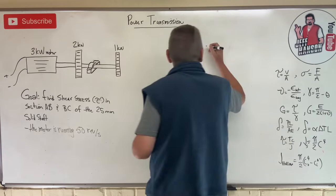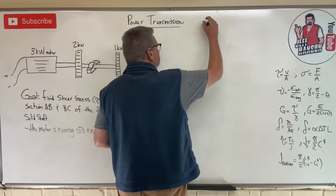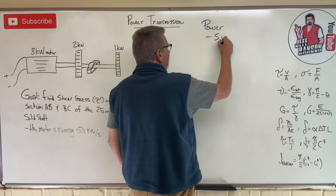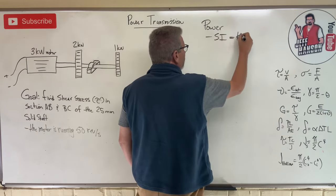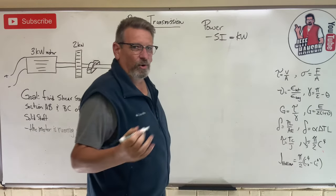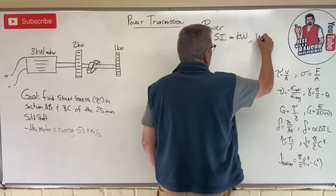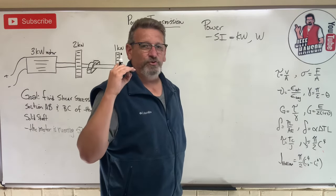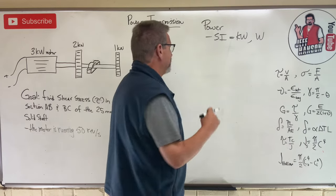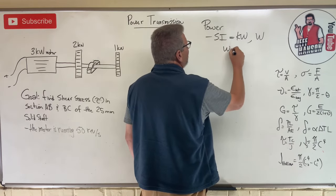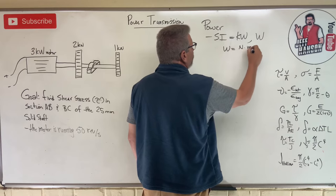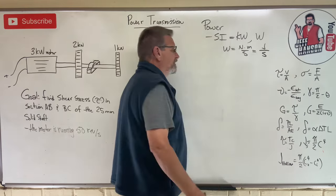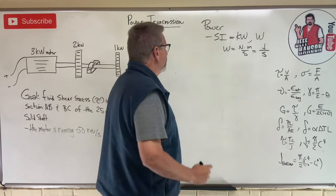We've got an electric motor that generates three kilowatts of power. So what is power? In SI units it's going to come in kilowatts or watts. And what is a watt? Well, remember power is just work over some period of time. So a watt is a Newton meter per second, or you might see it as a joule per second. It's work over time.